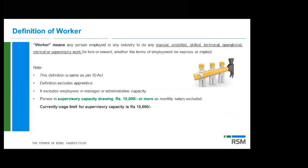Definition of 'worker' — worker means any person employed in any industry to do any manual, unskilled, skilled, technical, operational, clerical or supervisory work for hire or reward. The definition excludes apprentices and employees in managerial or administrative capacity — those people are covered under the definition of 'employee' but not under 'worker'. A person in supervisory capacity drawing up to 15,000 will be covered; earlier the limit was 10,000.